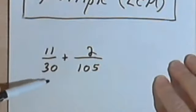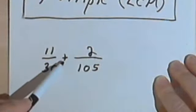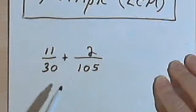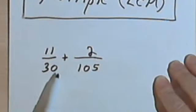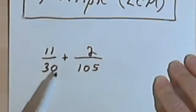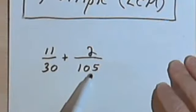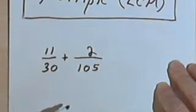Let's say you've got an addition problem with fractions like this: 11 over 30 plus 2 over 105. We want to find the number that you can turn both the denominators into by multiplying them. In other words, we want to multiply 30 by something and 105 by probably something else, and turn them both into the same number.